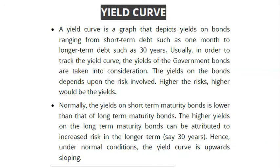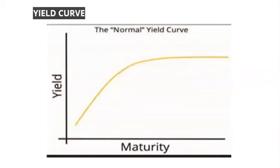The yield curve is a graph that depicts the yield on bonds ranging from short-term debt such as one month to longer-term debt such as 30 years. Usually, the yields of government bonds are tracked. Yields depend on risk involved — higher the risk, higher the yields. Normally, yields on short-term maturity bonds are lower than on long-term maturity bonds, due to increased risk in the long term. Under normal conditions, the yield curve is upward sloping.